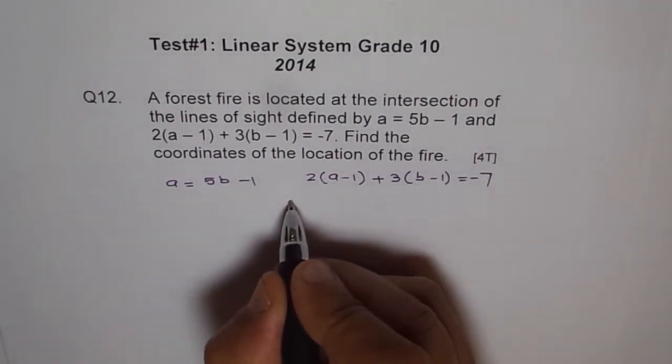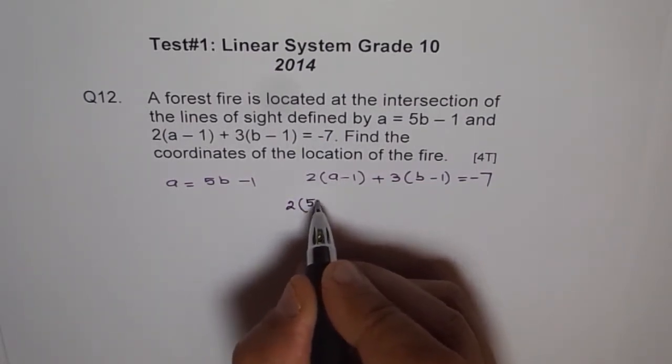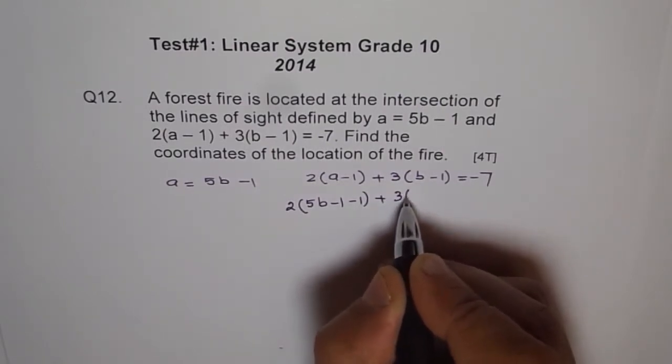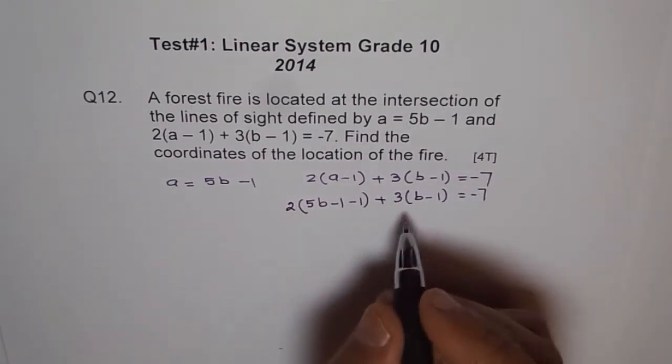We have here two times. Instead of A, I will write 5B minus 1. 5B minus 1 minus 1 plus 3 times B minus 1 equals minus 7. Let us expand.